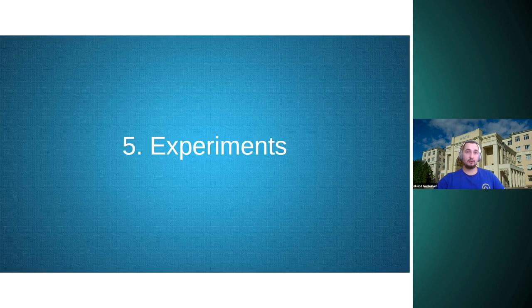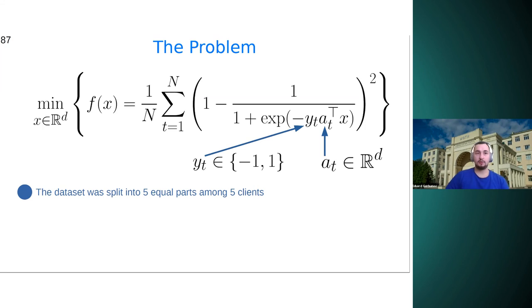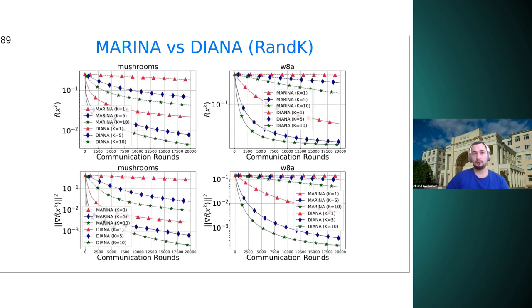Well, we consider the following problem. It's a non-convex optimization problem. And it is needed for binary classification. And you can see there is data sets from LibSVM library. And each data set was split into five equal parts among five clients. And we use theoretical step sizes. And we obtained that in all experiments, Marina outperforms DIANA with different compression operators in terms of loss and in terms of squared norm of the gradient. And also, outperforms in comparison to communication rounds and in terms of transferred bits per worker.